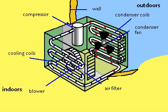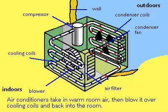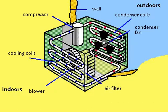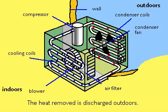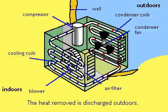Air conditioners are heat exchangers. They take warm air from a room, blow it over cooling coils to remove the heat, and then return it to the room. The heat absorbed by the cooling coils is then blown outdoors.